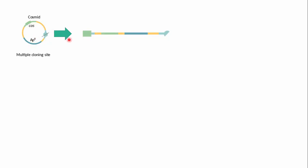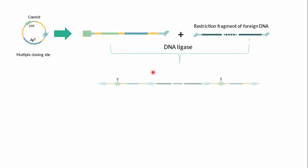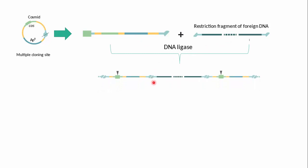A restriction enzyme cuts our cosmid vector at the restriction site, and our circularized cosmid vector becomes linear. We also cut our foreign DNA of interest with the same restriction enzyme used for the cosmid vector. Then DNA ligase enzyme comes and ligates our restricted cosmid vector and the exogenous DNA, forming a recombinant cosmid vector.